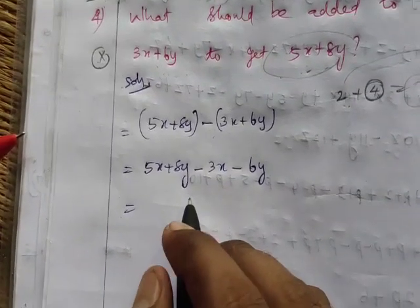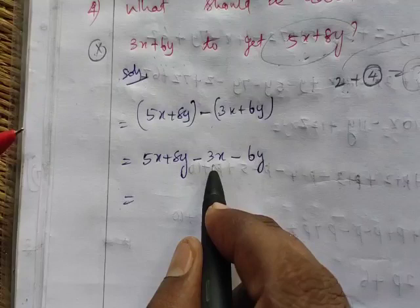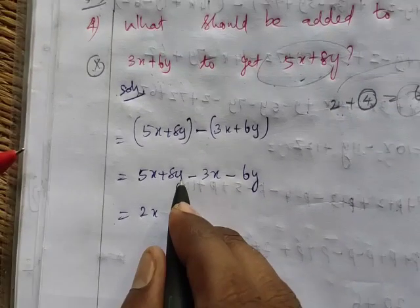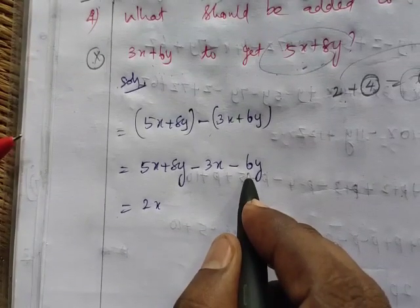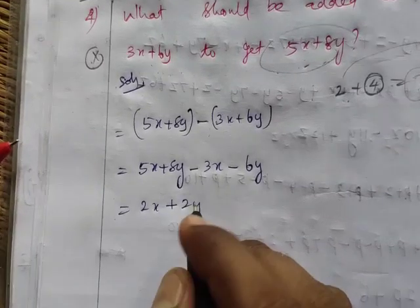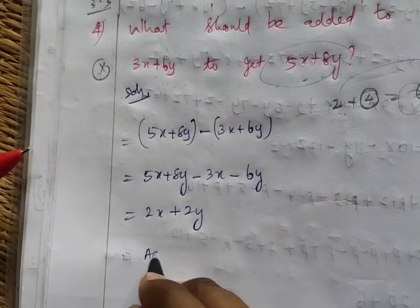Now we combine like terms. 5x and 3x: that's 5x minus 3x equals 2x. Then 8y minus 6y equals plus 2y. So the answer is 2x plus 2y. Therefore what should be added is 2x plus 2y.